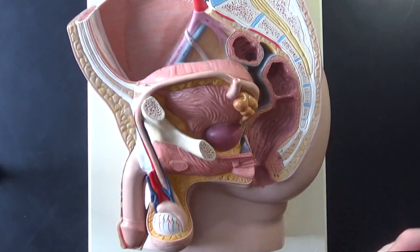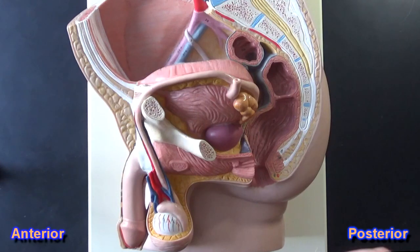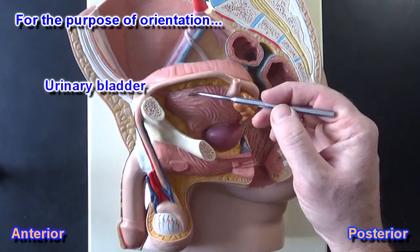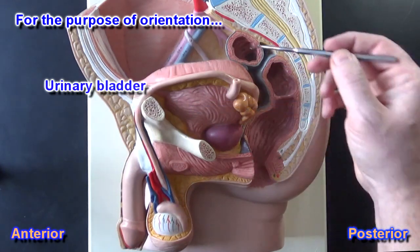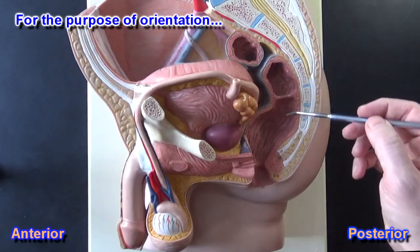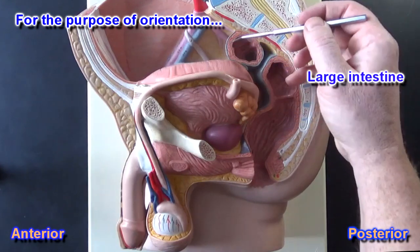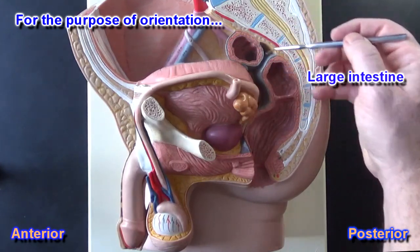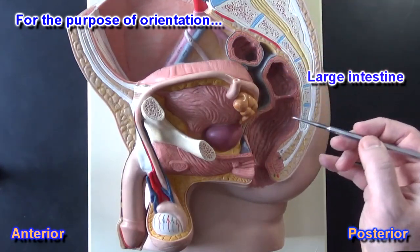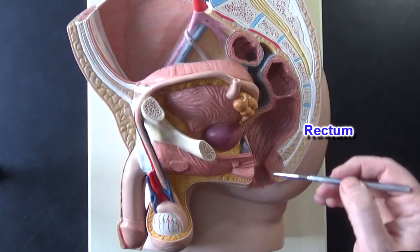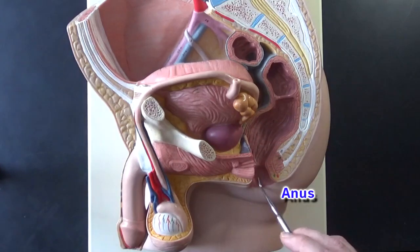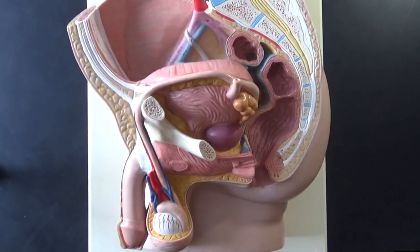Here we have a model of the male reproductive system. This is the urinary bladder right here. We can see the intestines — the large intestine, specifically the rectum right here, and then the anus right here.